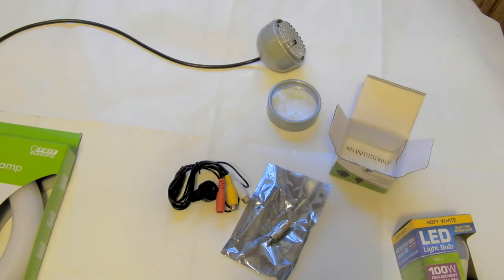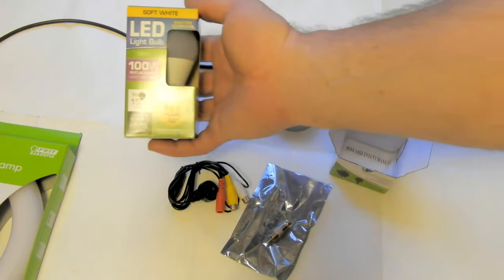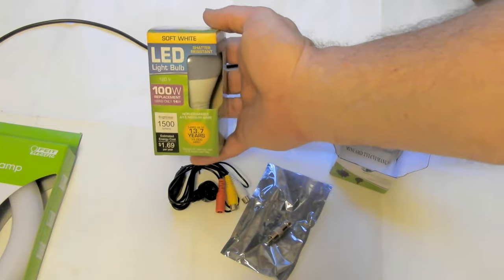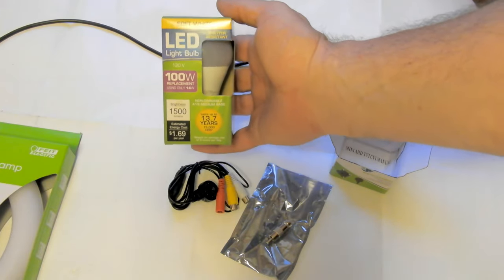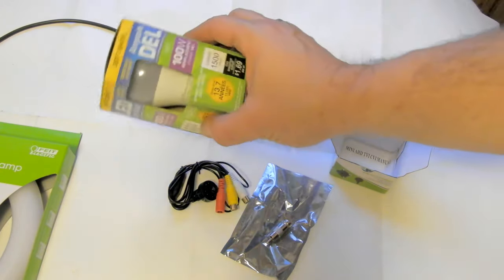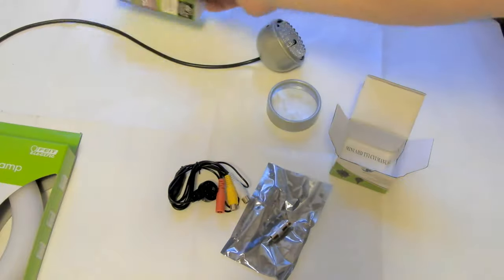A quick unboxing, sort of, of LED related items. First is an LED light bulb, 100 watt equivalent for a dollar. I thought that was pretty amazing. It's not dimmable. I'll look at that later.